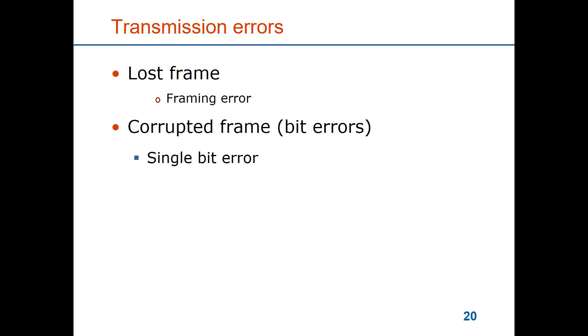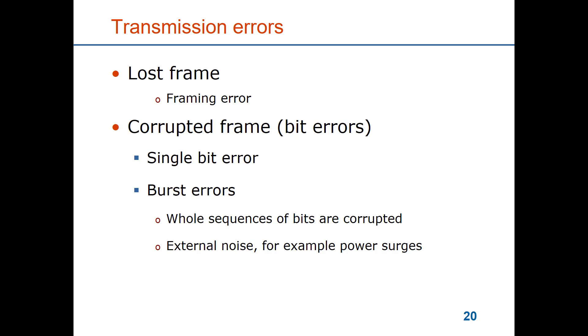There could also be errors inside the frame. A single bit error is one where a single bit has been flipped, so a 0 has become a 1 or a 1 has become a 0. But there could also be burst errors where whole sequences of bits are corrupted. This could be for instance when lightning strikes a link, or on your Wi-Fi when you run the microwave oven to heat your tea.